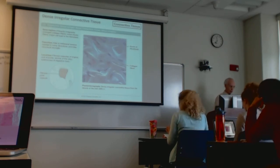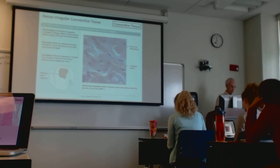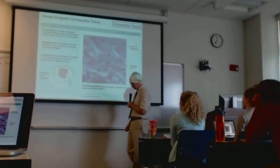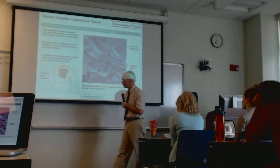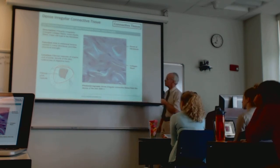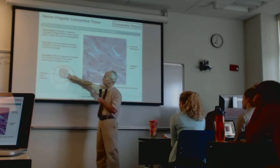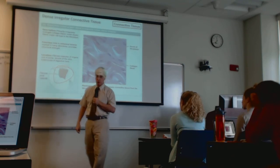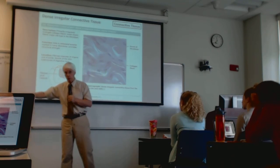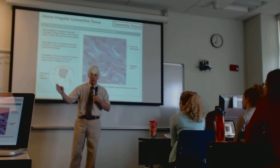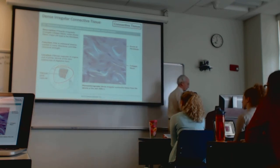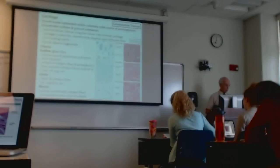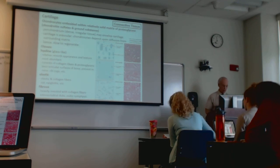Joint capsules we previously saw in illustrations consist of an interior and exterior compartment; the exterior compartment generally consists of ligamentous tissue that sometimes has a more irregular arrangement. Please understand that all of these terms are just descriptive — they're not rigid categories. They are loose descriptions of the arrangement of cells and fibers in the tissue. We'll move on to talk about cartilage next.